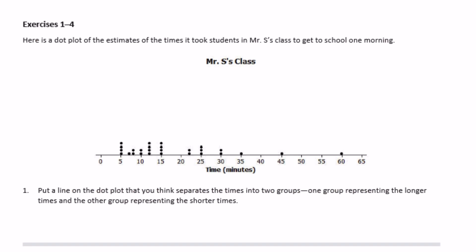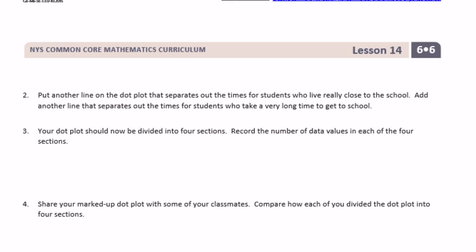Exercises one through four. Here's a dot plot of the estimate of the times it took students in Mr. S's class to get to school one morning. One, put a line on the dot plot that you think separates the times into two groups. One group representing the longer times and the other group representing the shorter times. So we're just going to put a line where we think the midway point may be. So we have something all the way over here at 60 and 5. So where do I think the middle is? I think the middle is going to be somewhere maybe around here. And yours could be different. But I think that's about the middle or where the median might be.